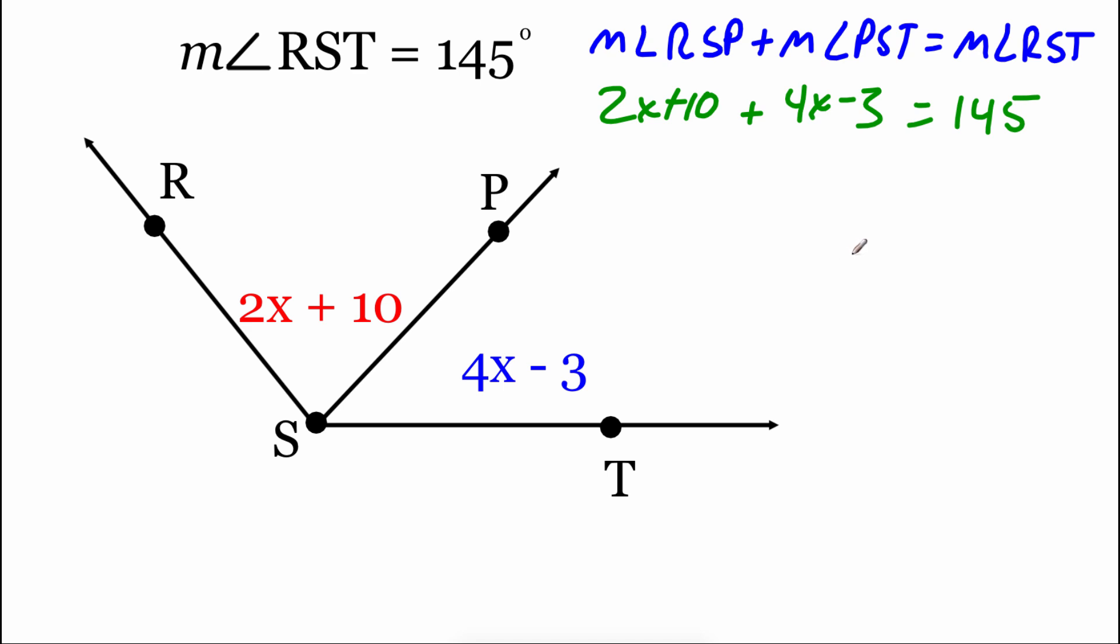Now what I'm going to do is look at combining like terms on the left-hand side. So we've got a 2x and a 4x. So if we add those together, that's 6x. We've got a plus 10 and a minus 3. So that should give us a plus 7. And that's going to equal 145. Now if we think about this like algebra solving, we need to get x all by itself. So with this plus 7, first thing I'm going to do is subtract 7 from both sides. So we end up with 6x equals 138. And then if we divide both sides by this 6, in order to get rid of that multiplication, we get x equals 23.